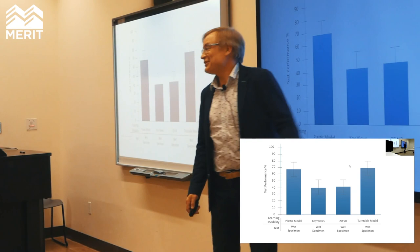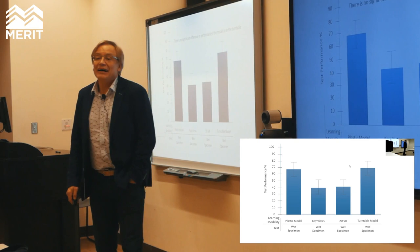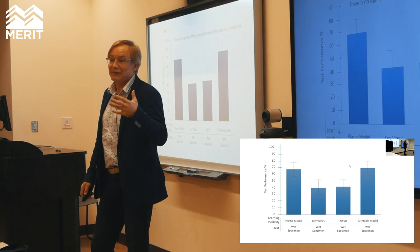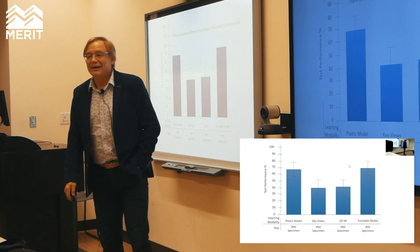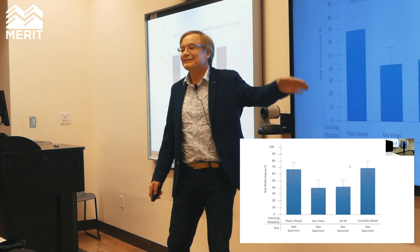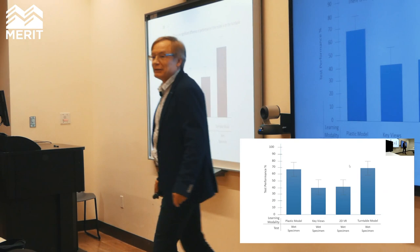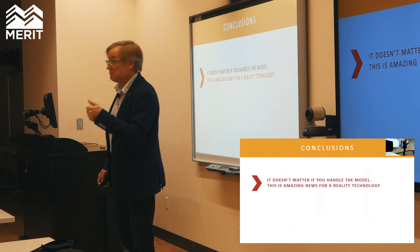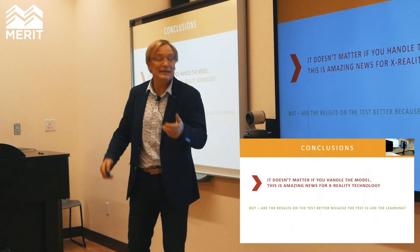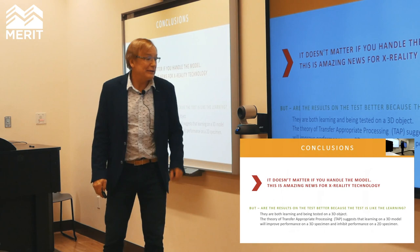Almost everybody we test is undergraduates without much anatomy training, because prior training ruins the experiment. They're all bright 18-year-olds — each a different group. So it's not a crossover where we tested them on each object — you'd run out of anatomy. So basically it says it doesn't matter if you handle them. And if you're keeping track: that means X-reality with no haptic feedback is probably pretty good. It gets quoted in journals telling you X-reality is really good because you don't need haptic. But is it because of transfer appropriate processing?